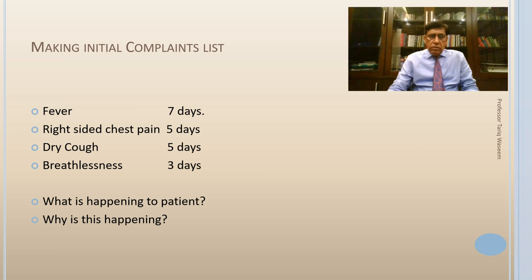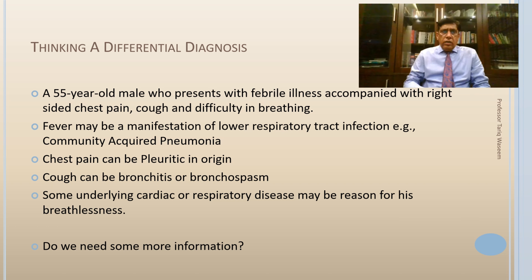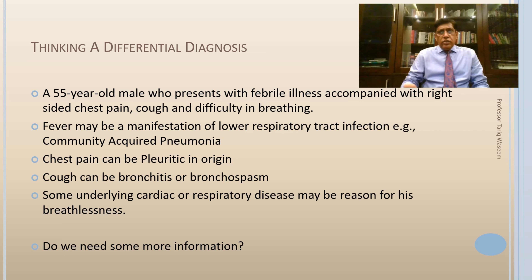Once you have charted a list of presenting complaints — a 55-year-old male with febrile illness, right-sided chest pain, cough, and difficulty breathing — there are possibilities. Fever may indicate lower respiratory tract infection or community-acquired pneumonia. Chest pain can be pleuritic in origin, but a 55-year-old male can have other causes. The nature, character, and type of pain would help differentiate respiratory, cardiac, or musculoskeletal chest pain. His cough may indicate bronchitis or lower respiratory tract infection, and he may also be a smoker or have previous lung disease.